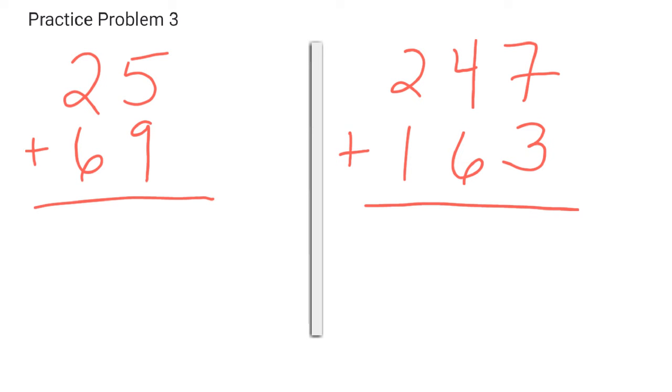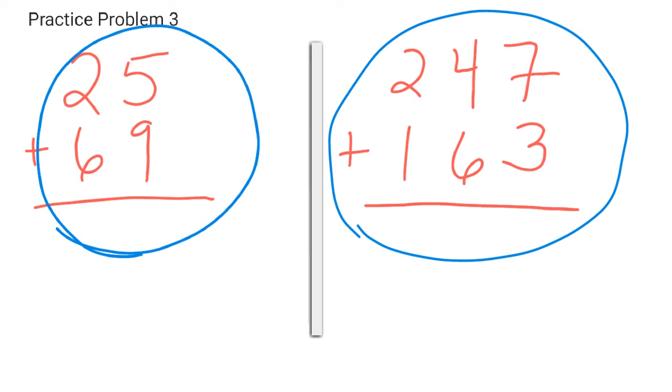Okay, so for practice problem three on your organizer, what I would like to have you do is to solve these on your own. 25 plus 69, a two digit by two digit addition number, and 247 plus 163. Complete those on your own. This is independent practice, and then we'll go over these in class tomorrow.